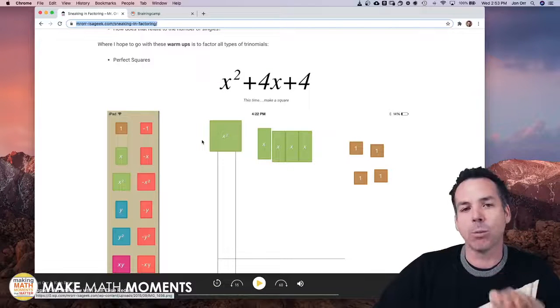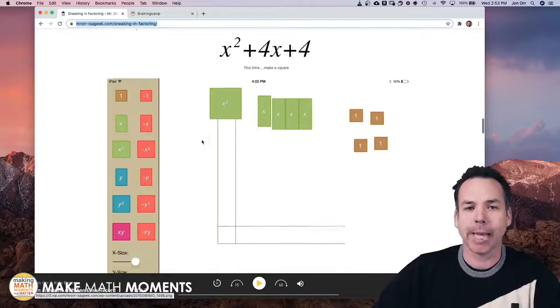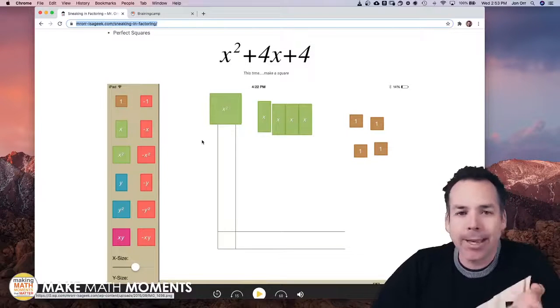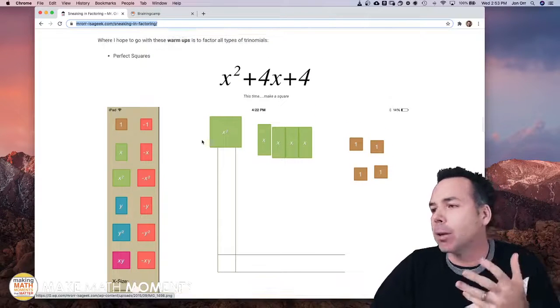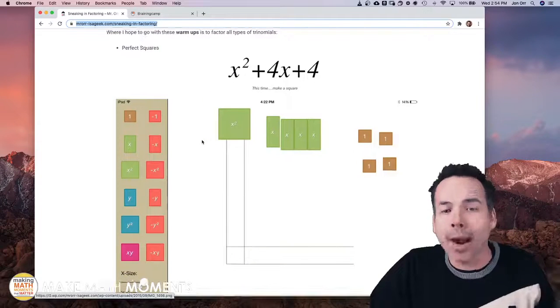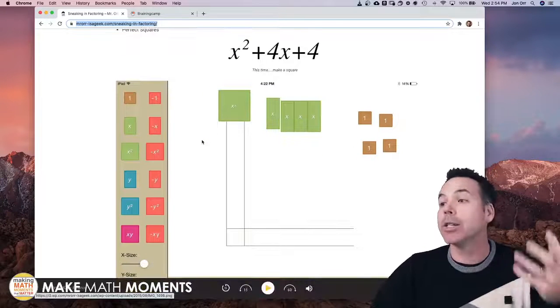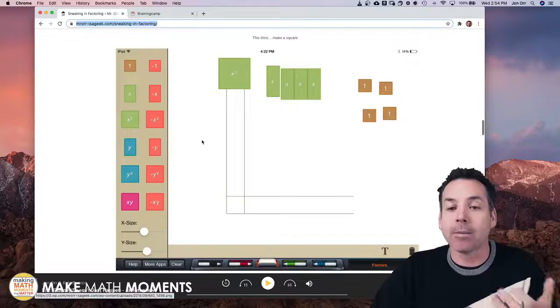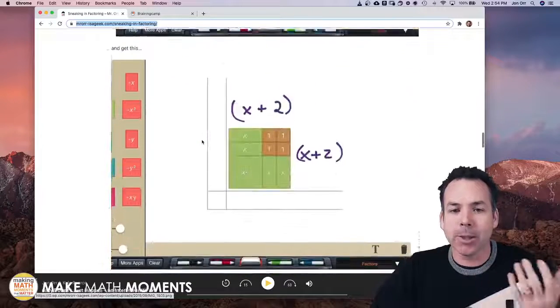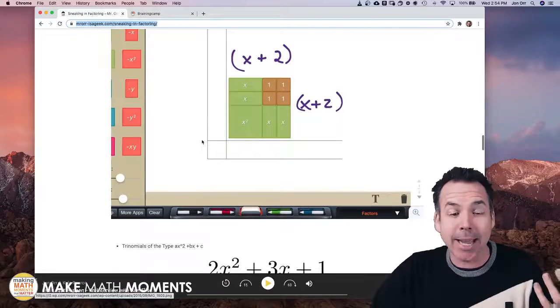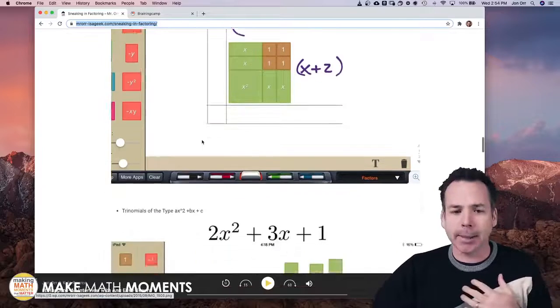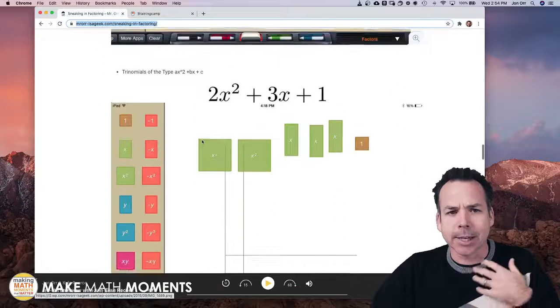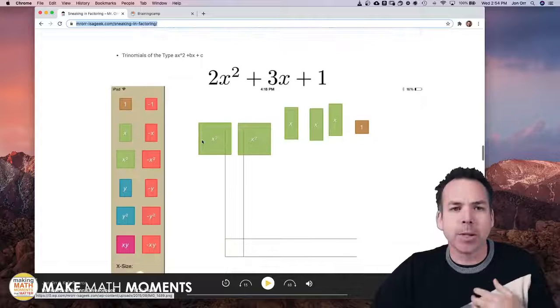Then you can say well you know what, let's not build a rectangle anymore, let's build a square. Now we're starting to sneak in completing the square because if you can complete a square, if you can make that square, your dimensions are the same.